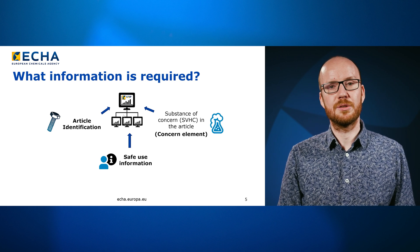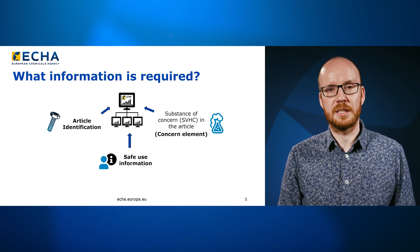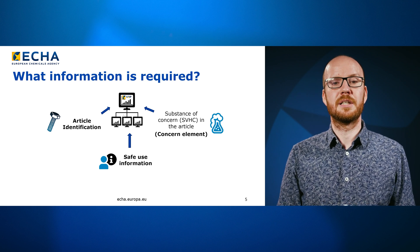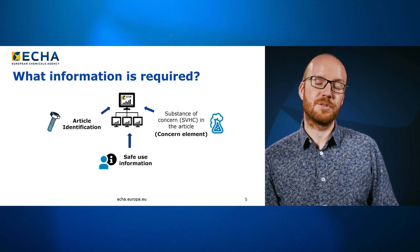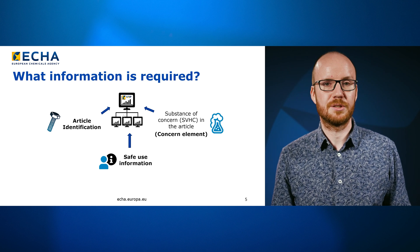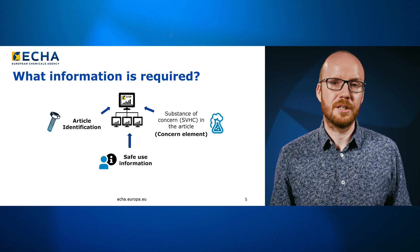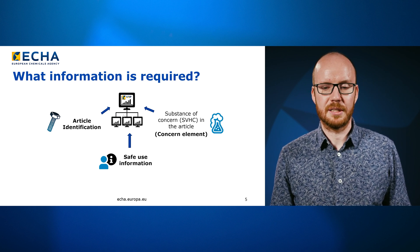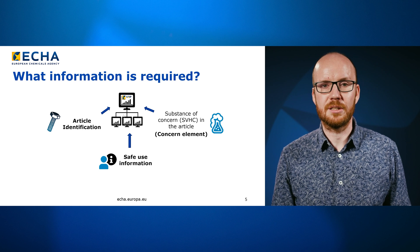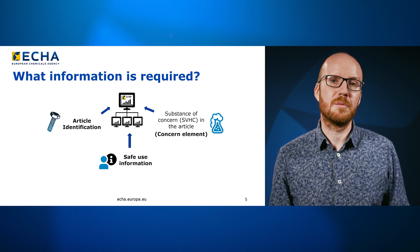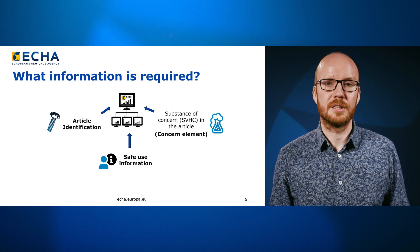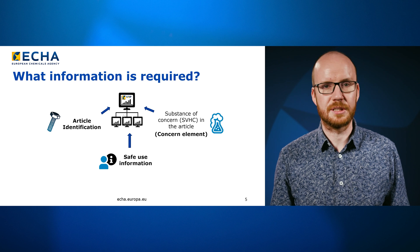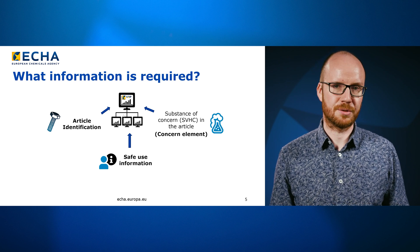What type of information do these actors need to provide to the European Chemicals Agency? There are three main categories. First of all, there is information about the article itself — a description of the product or the article containing the substance of very high concern. Then, the concern element itself needs to be described: what is the substance of very high concern in the product, and what is its concentration range — how much of it is in the product?